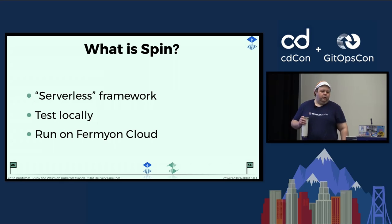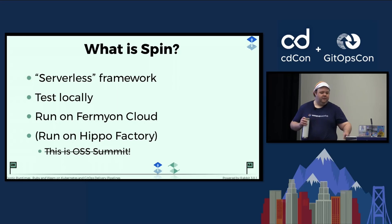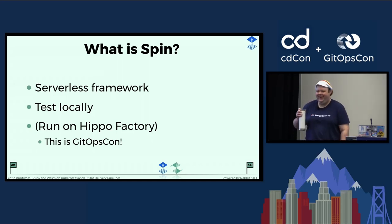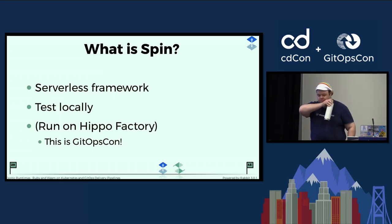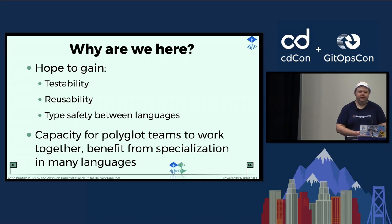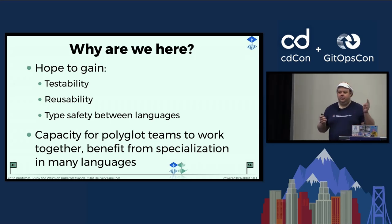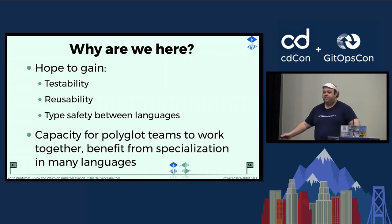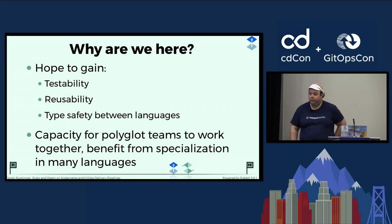So where are we going to run it? We're not going to run it on Fermyon Cloud or HippoFactory — we already have Kubernetes. HippoFactory is the open source version of Fermyon Cloud. We're going to run it on Kubernetes; this is GitOpsCon after all. These are the things we hope to gain from WebAssemblies: testability, reusability, type safety between languages. We have the capacity for polyglot teams to work together with WebAssembly. If there are things you can do especially well in a different language, or another team uses that language and doesn't know yours, you can work with that team. This is great.